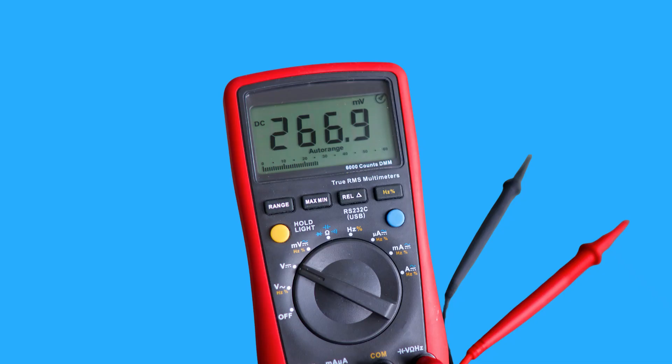In electricity, we measure voltage in units called volts, symbolized by the capital V. There are two main types of voltage: Direct current, or DC, and alternating current, or AC.